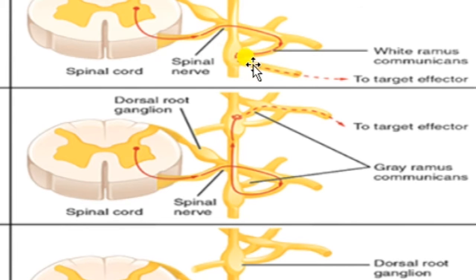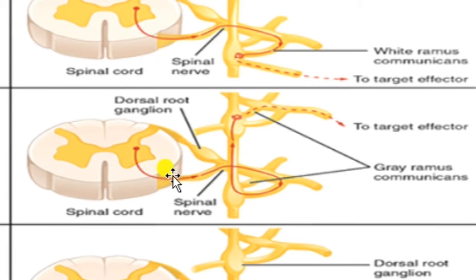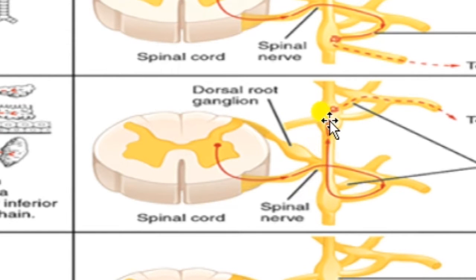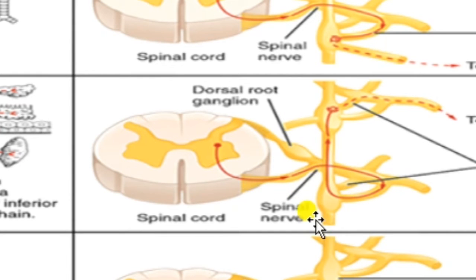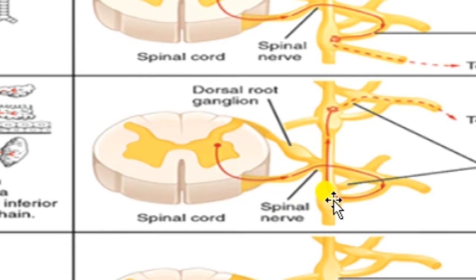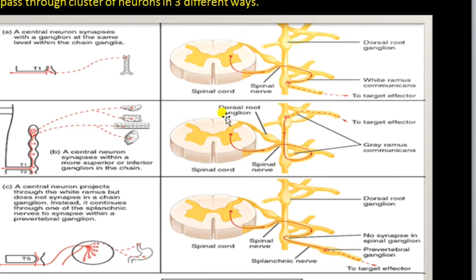In the first pathway, a synapse is formed with the postganglionic neuron inside the sympathetic chain ganglion, and that postganglionic neuron is then applied to the target organ. In the second pathway, the preganglionic neuron passes through the white ramus communicants but does not form a synapse in the chain ganglia at the same level — instead it moves toward the upper or lower region, forming synapses in the superior or inferior ganglia.